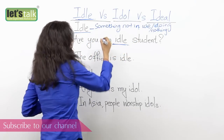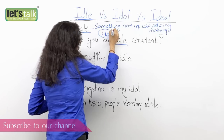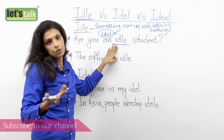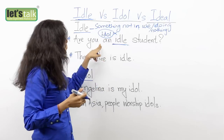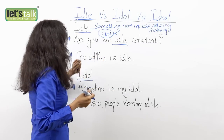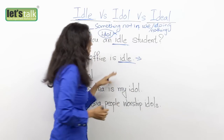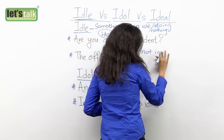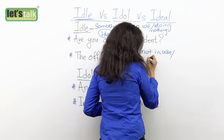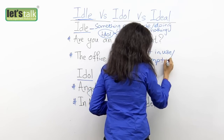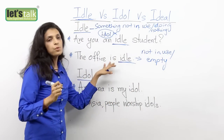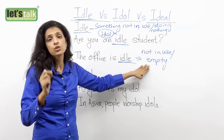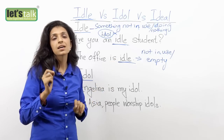Now do not use I-D-O-L here because that would be wrong — it's a completely different meaning. So when you want to say you're doing nothing, or something is empty or not in use, you say idle. For example, 'the office is idle' means it is not in use, it is empty. So remember: when you want to say something is not in use, doing nothing, vacant, or empty, you use I-D-L-E, pronounced 'idle.'